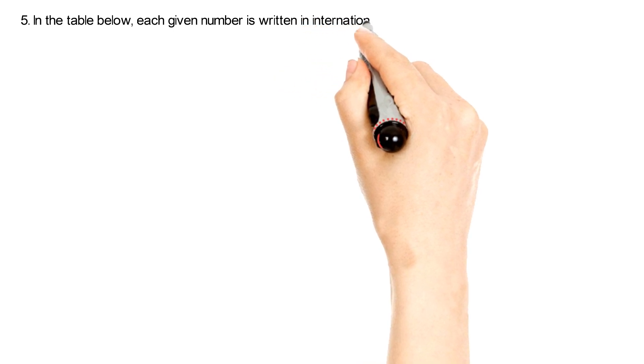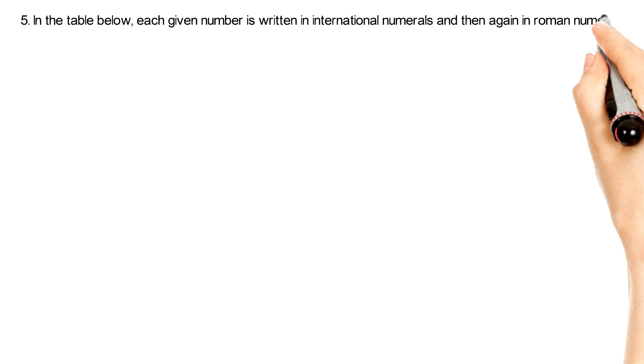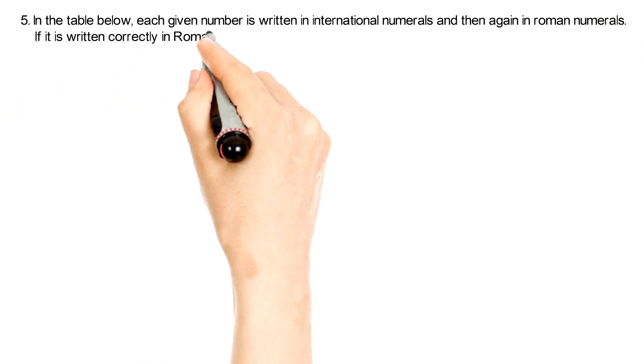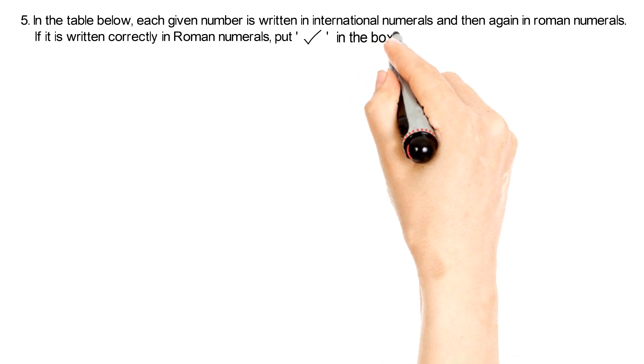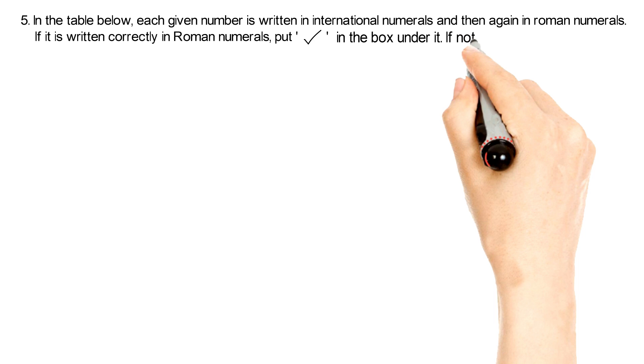Question No. 5. In the table below, each given number is written in International Numerals and then again in the Roman Numerals. If it is written correctly in Roman Numerals, put write in the box under it. If not, put cross and correct it.